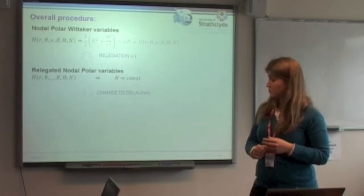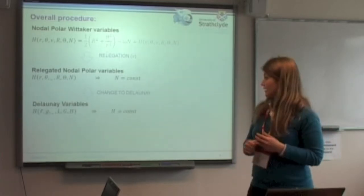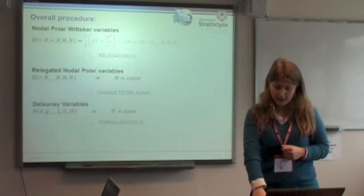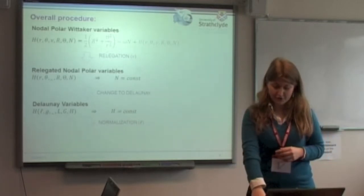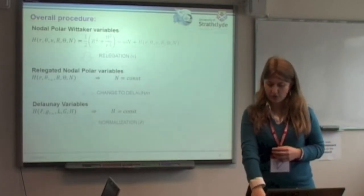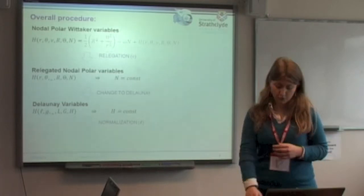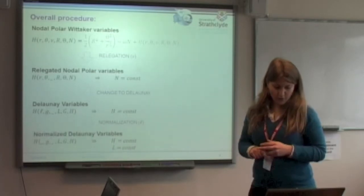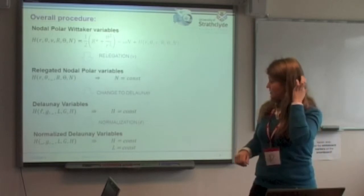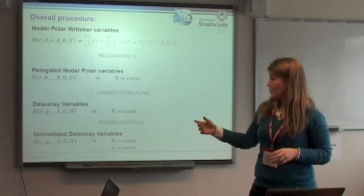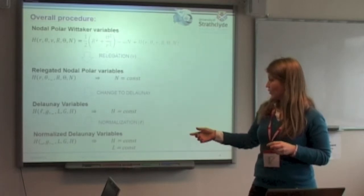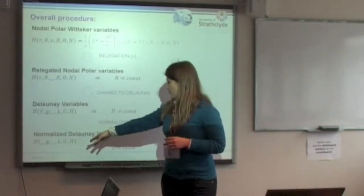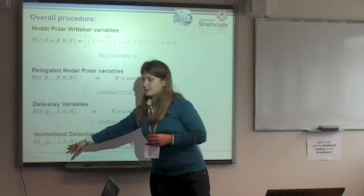Then what we do is change to the Delaunay coordinates, and again we will have one coordinate missing that is the one corresponding to the argument of node, and through another process that is called the normalization, which is essentially equivalent to averaging on the mean anomaly, on the true anomaly, we get to the normalized Delaunay variables, which will give us a Hamiltonian without the mean anomaly and the argument of node, such that we have four variables, but two would be constant, so just a Hamiltonian in two variables.